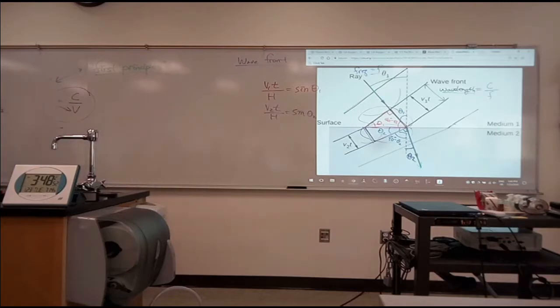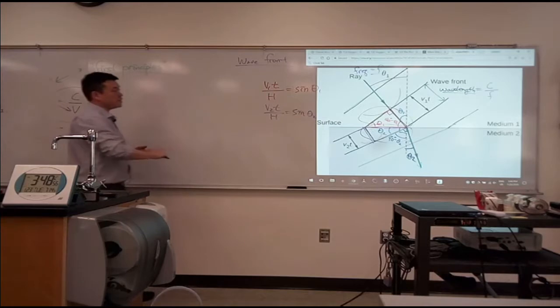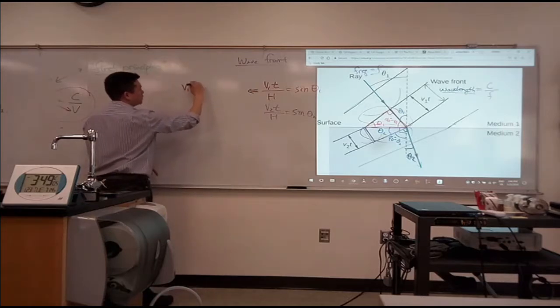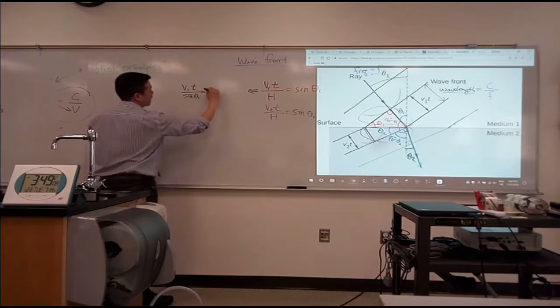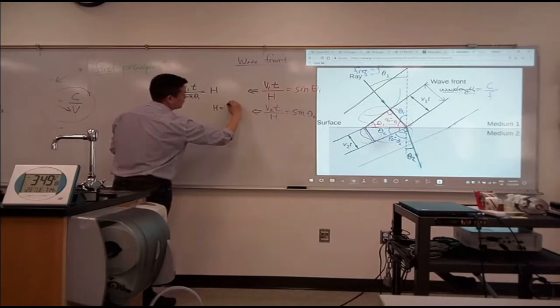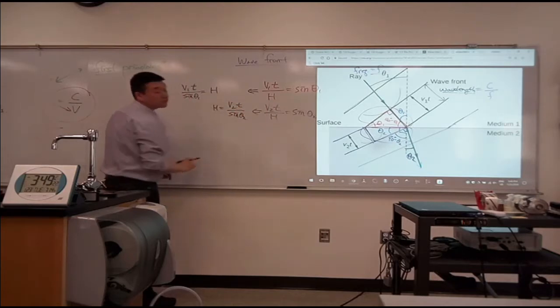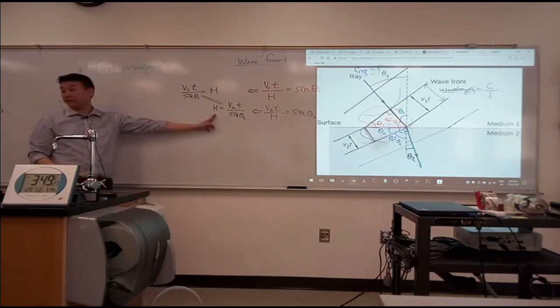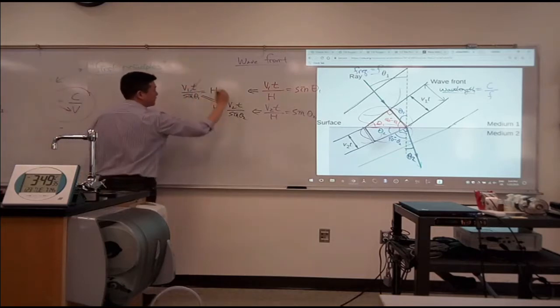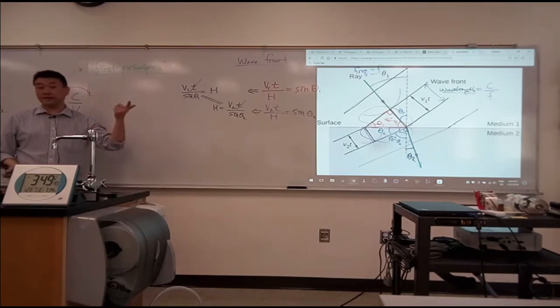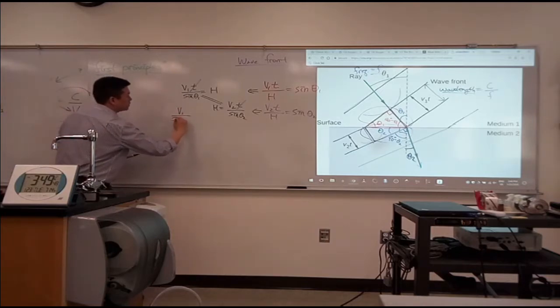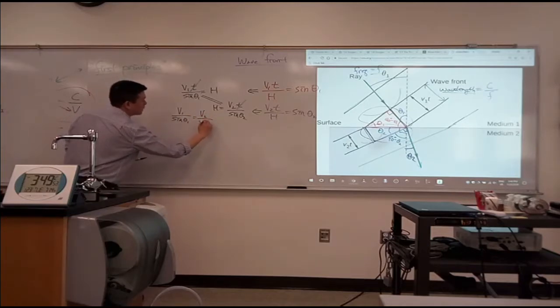And this is how you derive Snell's law. There's one other way to do it, but this is one way to do it. So each of these expressions, we are going to solve it for H, the hypotenuse. So this becomes V1T over sine theta one is the hypotenuse. And this expression becomes the hypotenuse is equal to V2T over sine theta two. So we just say these two are equal to each other and skip the hypotenuse. Once you do that, then you can get rid of a lot of arbitrary quantities, like the time period T. In the end, we want an expression that doesn't depend on frequency or wavelength. So so far this is what you have. V1 over sine theta one is equal to V2 over sine theta two.